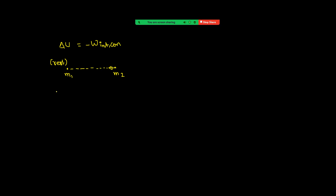Now let us calculate the work done by gravitational force. Work done by gravity is equal to the integral of G·M1·M2 divided by R squared. Since M2 is moving towards M1, the distance is decreasing, so DR will be negative. I am taking it as minus DR to make it positive. Force is on the left side, displacement also on the left side, so the angle between them is zero — cos zero.